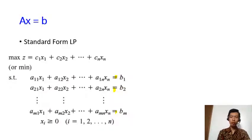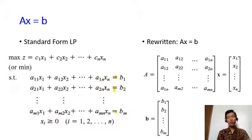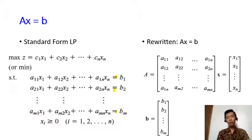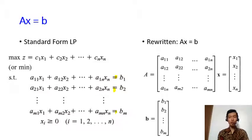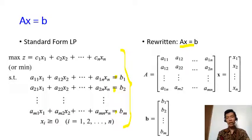Sometimes this is written in matrix form as A times x equals b, where A is a matrix of all the coefficients — an m-by-n matrix with m constraints and n variables. x is a column vector of all the x variables, and b is a column vector of all the right-hand side values, giving us the matrix form Ax = b.